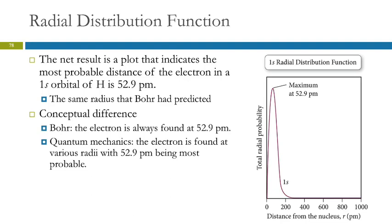In the Bohr model, the electron was always at 52.9 picometers because it was an object, a particle, going in a spherical orbit around the nucleus, which is much easier to think of but not correct. In quantum mechanics, the electron is found at various radii, but 52.9 picometers is the most probable.